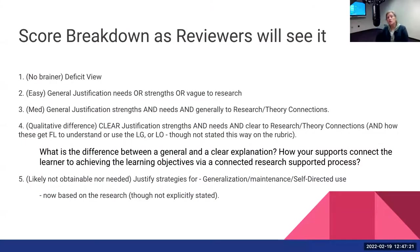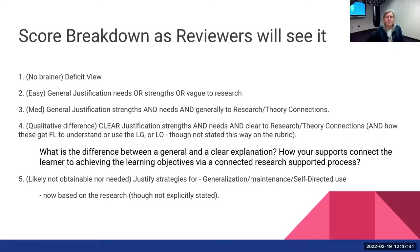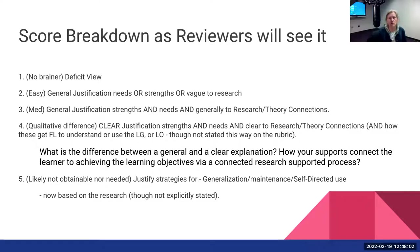Let me break down the scores as the reviewers will see them. If you have a deficit view of your student, that's a one — anything you put down gives you a one. If you have a general justification for why you picked particular support for student needs, or a particular way to challenge them for their strengths, and you have a loose justification between your support and your learner's strength or needs, that will get you a two. Or if you have a very vague connection to research and the support you chose, that also lands around a two. A two is a qualitative leap from a one, which is essentially nothing.